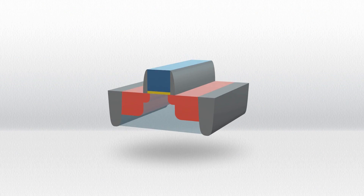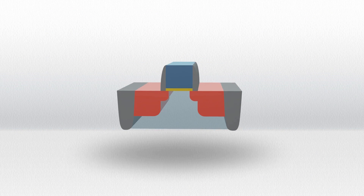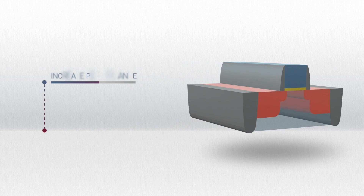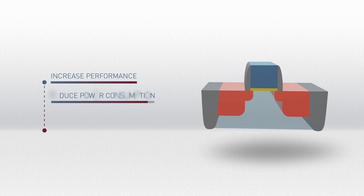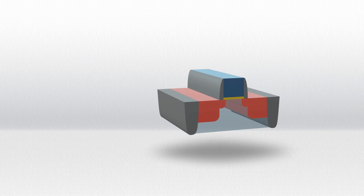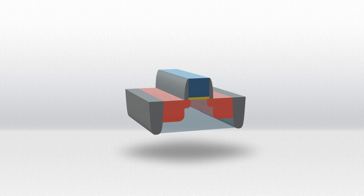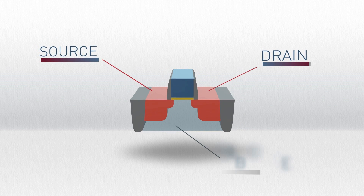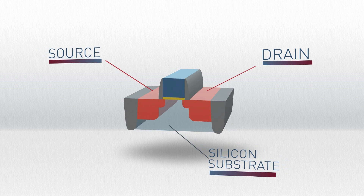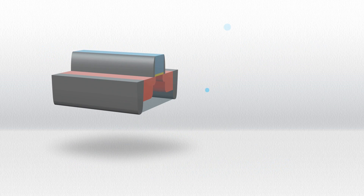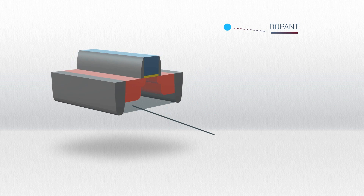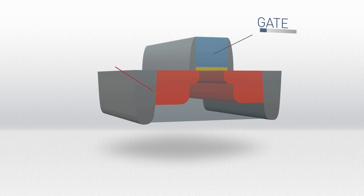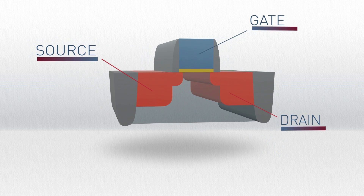To build better digital devices and enhance the user experience, the size of the transistors must be reduced while increasing performance and reducing power consumption. In a conventional bulk planar transistor, two electrical terminals — the source and the drain — are built in the silicon substrate. Some dopants are added to this substrate to improve the conductive properties of the silicon.